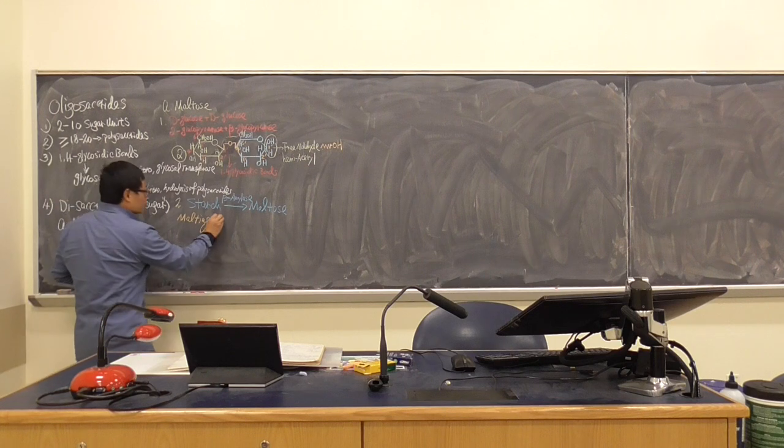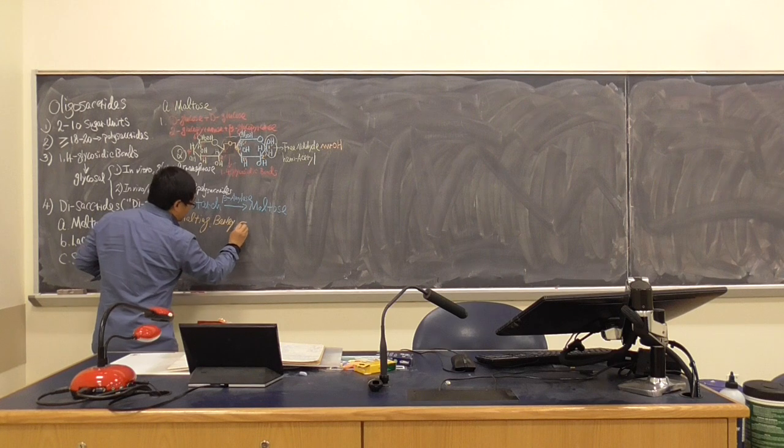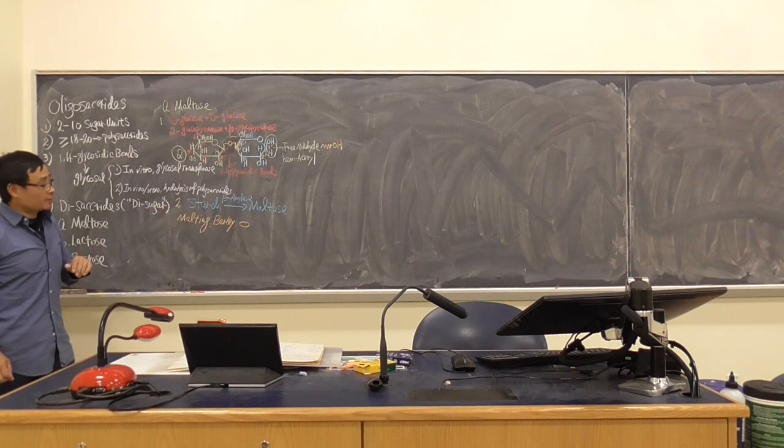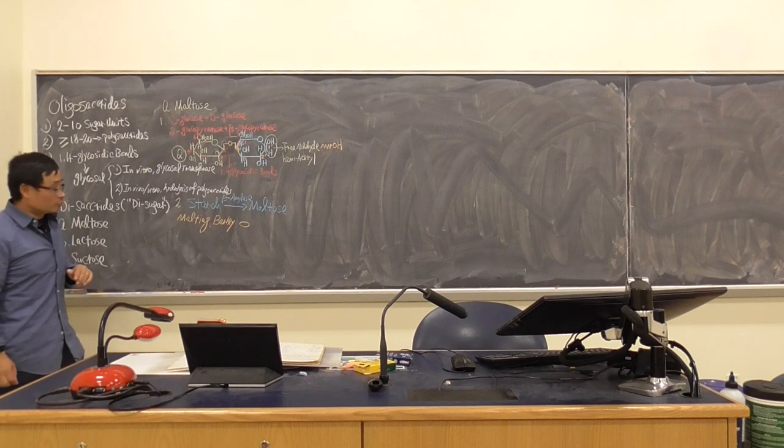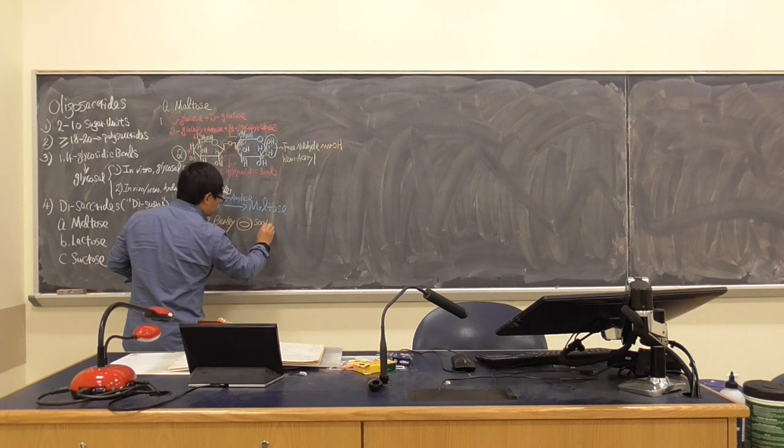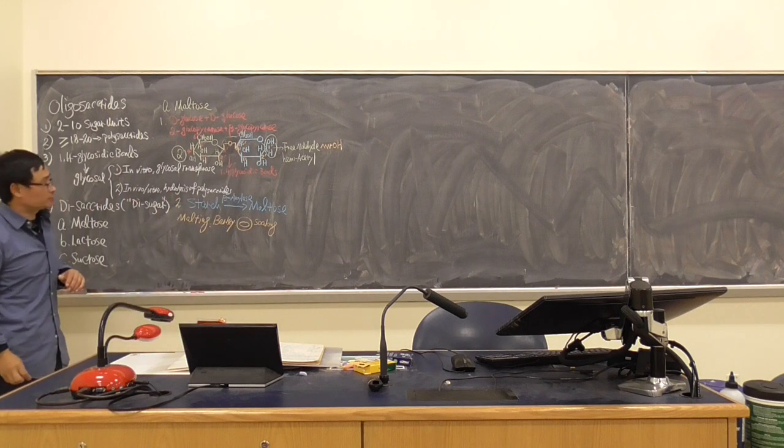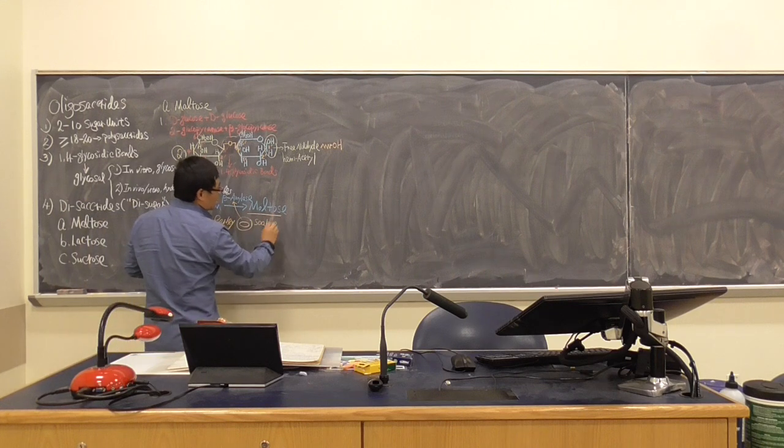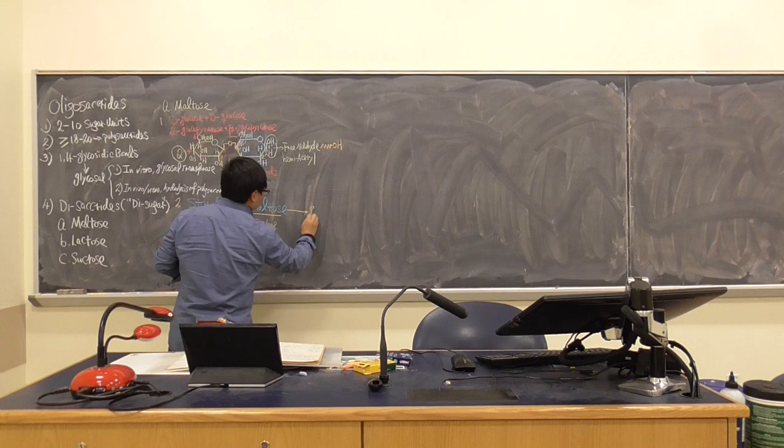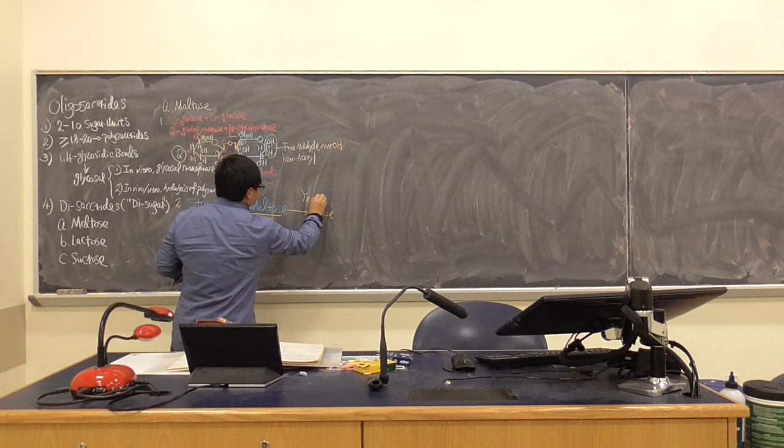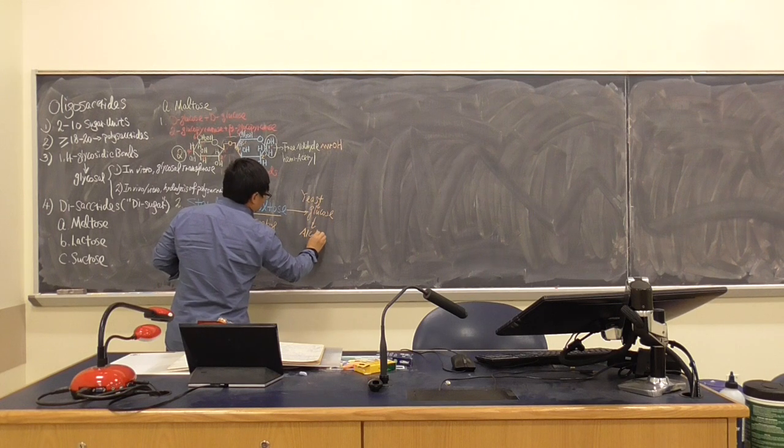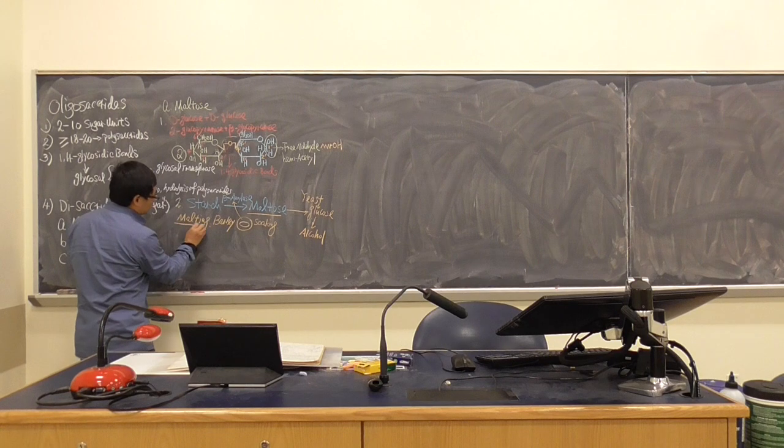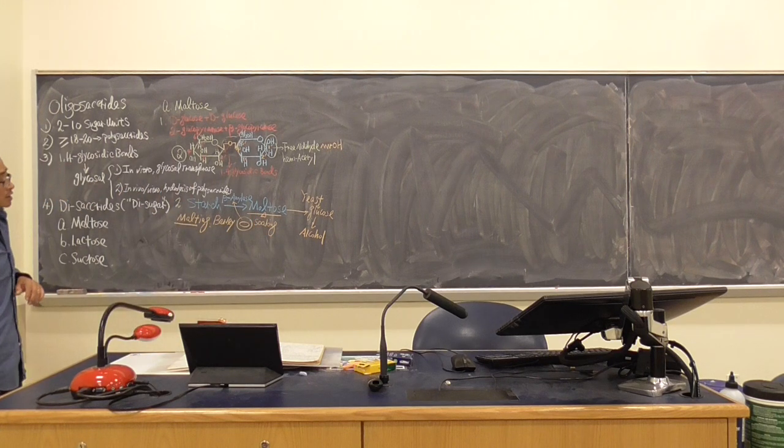When we talk about maltose, the word seems familiar. We talk about malting, the beer brewing process. You have barley, the major component is starch, and they have amylase. However, the yeast cannot use it. So you have to do the soaking. Then the beta amylase will be released, generate maltose, which breaks down to glucose, and then the yeast could use it.